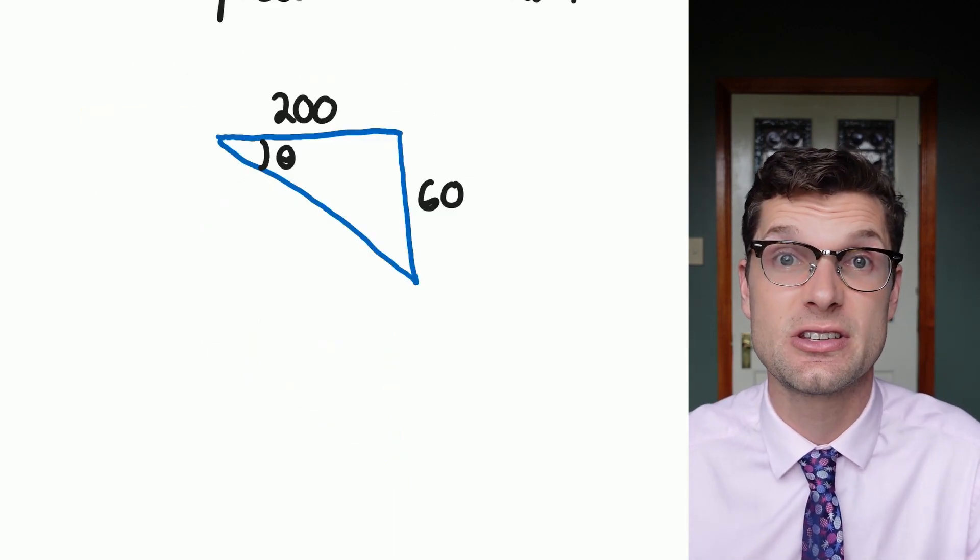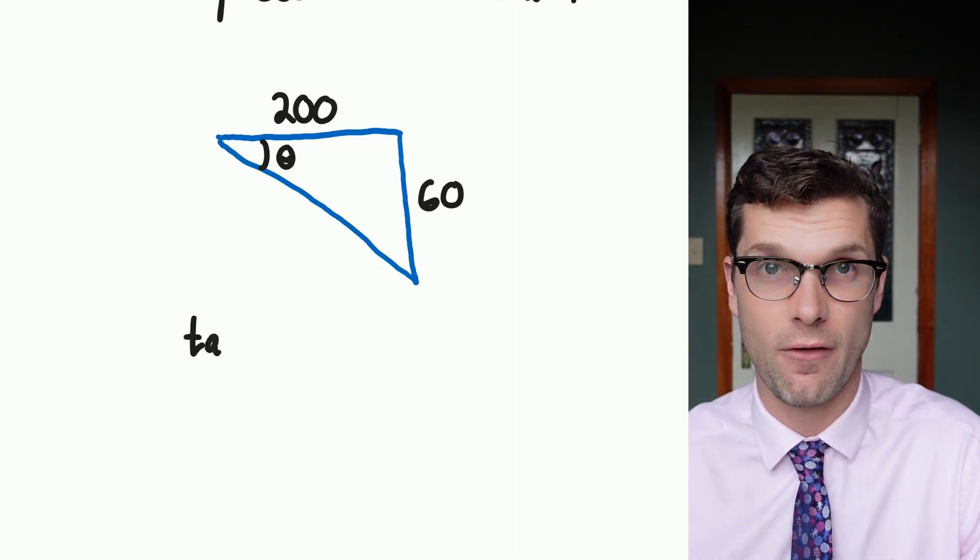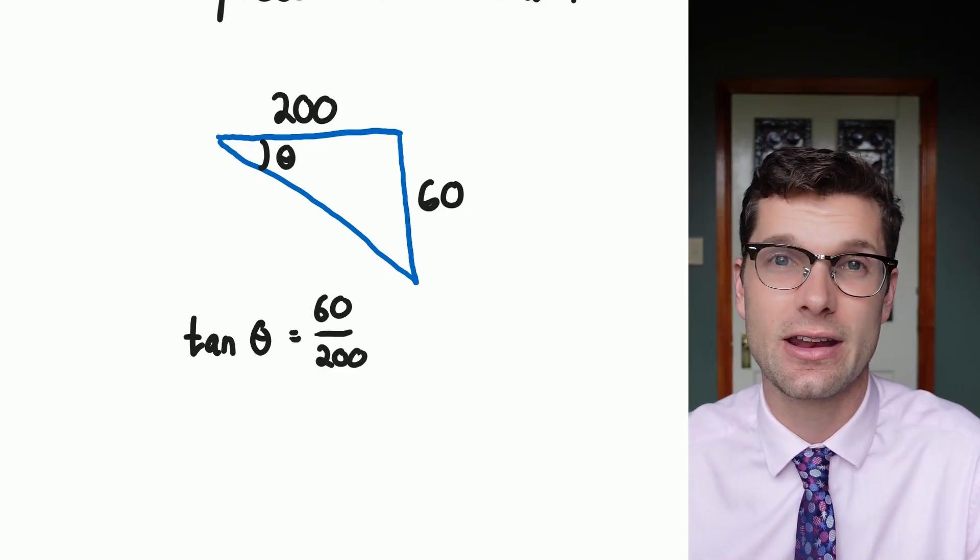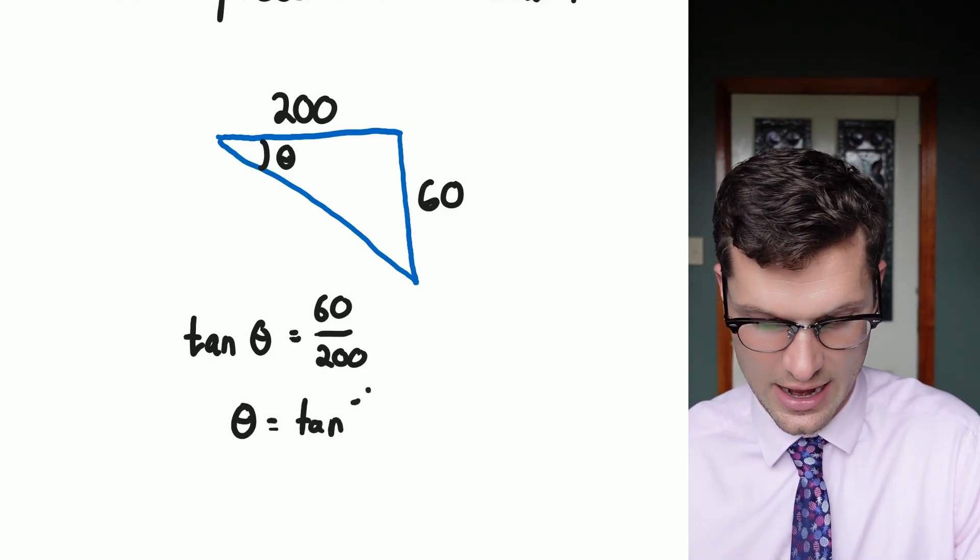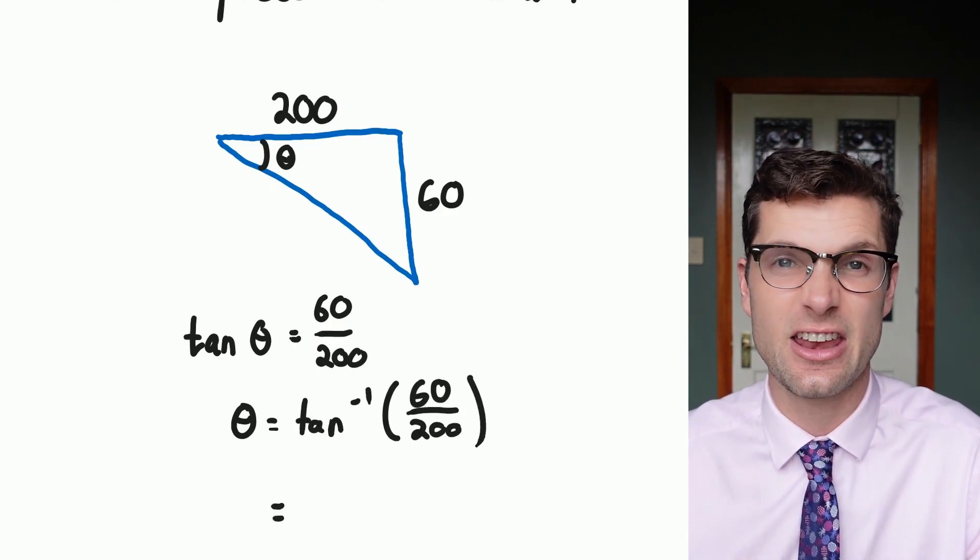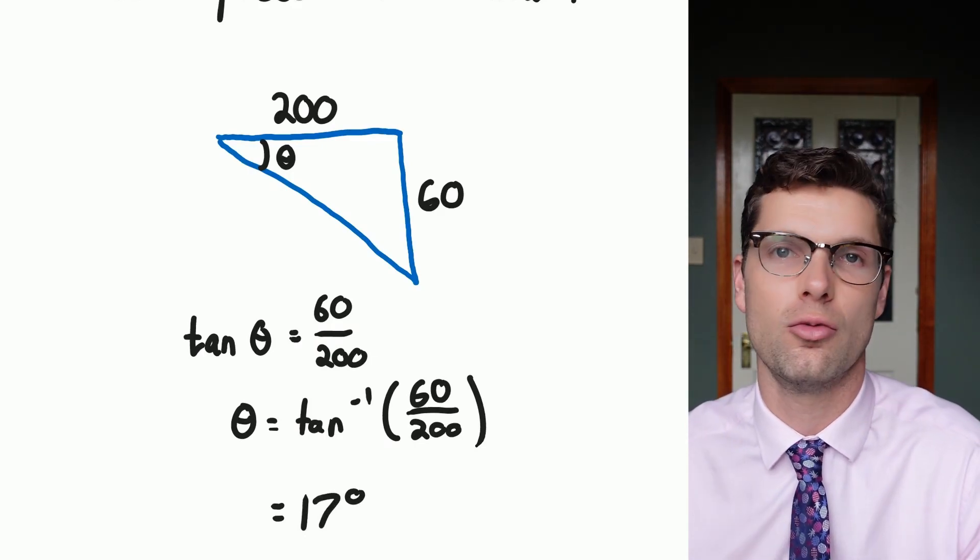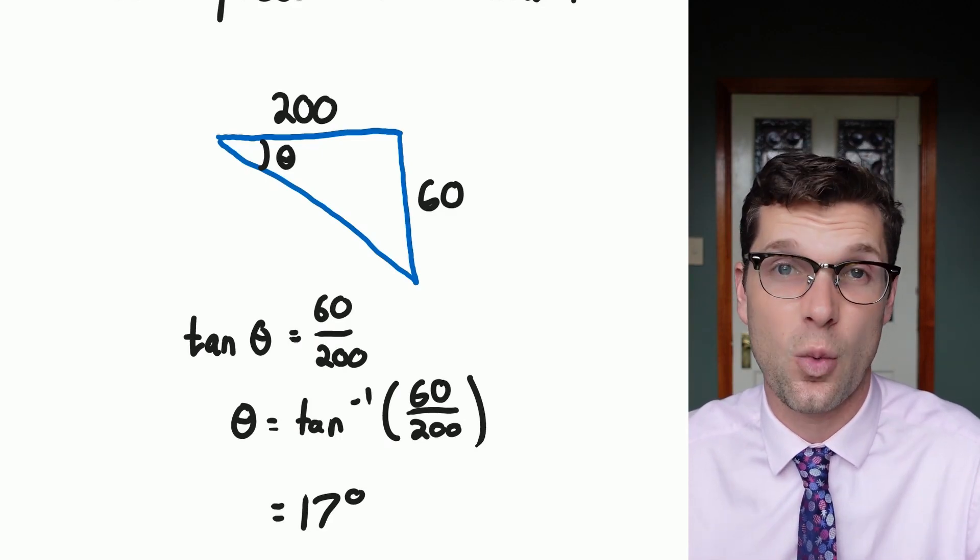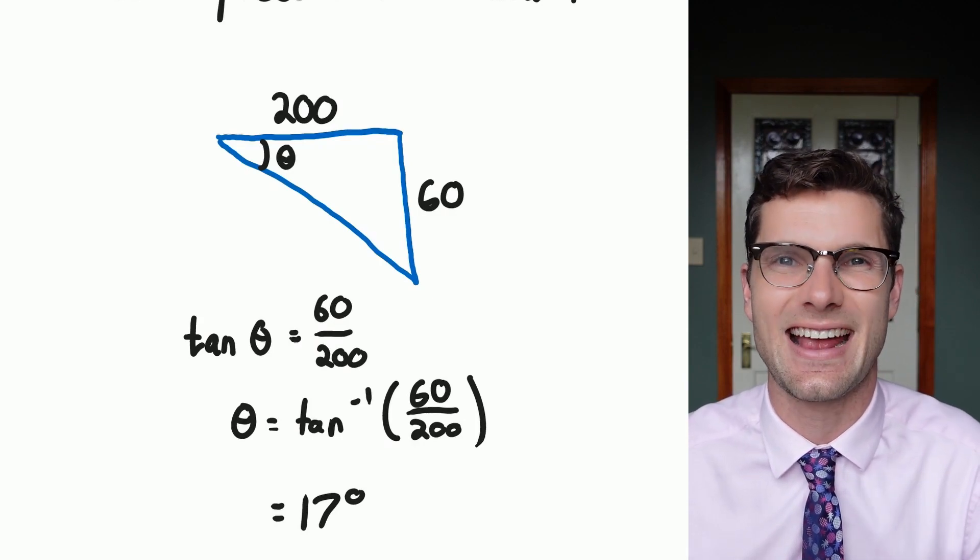For this one, I've got opposite and adjacent, so I know I must have tan. So tan of the angle that I'm trying to find is equal to opposite over adjacent, which is 60 over 200. In order to get this correct, I have to use the inverse of tan. So the angle of interest is equal to tan minus one, 60 over 200. Type that into your calculator, and you're going to find that the angle of depression for this question is 17 degrees rounded to the nearest degree. That's all we have to do for these questions. It's a one-step equation, but the marks come from the pre-work before the maths actually starts.